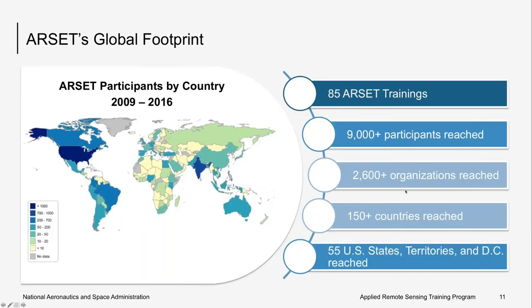ARSET has completed over 80 trainings since it began in 2009 and has reached thousands of participants globally. The figure on the left shows a geographic distribution of participants. We have reached over 8,000 people in over 2,000 organizations and 160 countries. Our online trainings are in high demand, especially with international audiences and in regions where there is little in-situ data or resources available.